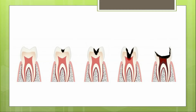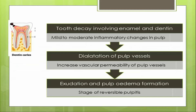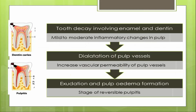This pulpal injury will involve the entire pulp resulting in death of the pulp. When there is deep dentinal caries, this results in mild to moderate inflammatory changes within the pulp, characterized by dilatation of the pulp vessels and an increase in vascular permeability. Increased vascular permeability results in exudation from blood vessels into the connective tissue, causing edema formation within the pulp - this is the stage of reversible pulpitis.